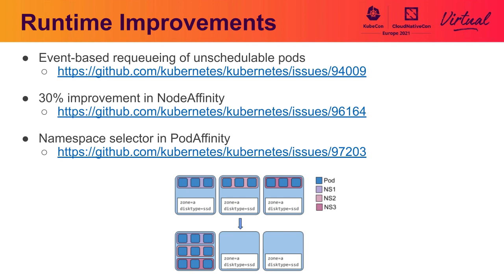We also made some improvements to the node affinity plugin and improved its throughput — there's discussion in the issue on how that was found and taken care of. The last thing is a big improvement for pod affinity: you can now widen the scope of namespaces for the pod affinity plugin. Previously, pod affinity only cared about pods within the same namespace. Now you can broaden the scope to look at multiple namespaces, which should be helpful for cases where you want pods from different namespaces to be co-located on the same node.